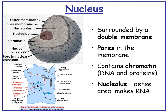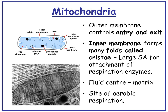The nucleus is surrounded by a double membrane with pores in it. The nucleus contains chromatin, which is DNA and proteins. The nucleolus is a dense area within the nucleus which makes RNA. Mitochondria: the outer membrane controls the entry and exit into the mitochondria. The inner membrane forms many folds called cristae, which provide a large surface area for the attachment of respiration enzymes. There is a fluid centre called the matrix, and the mitochondria is the site of aerobic respiration.